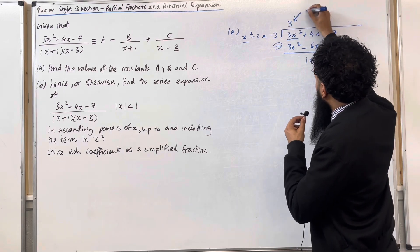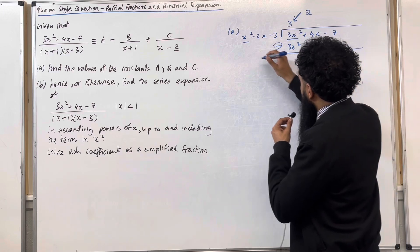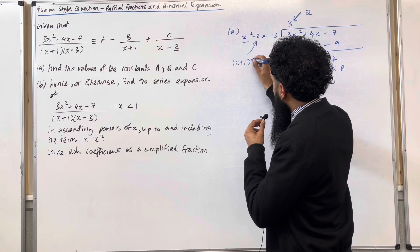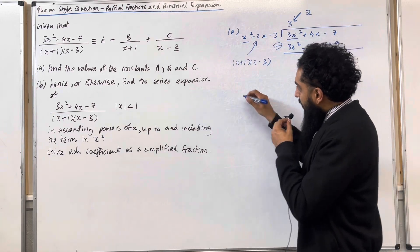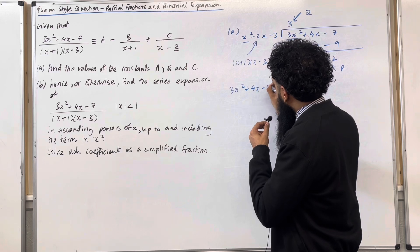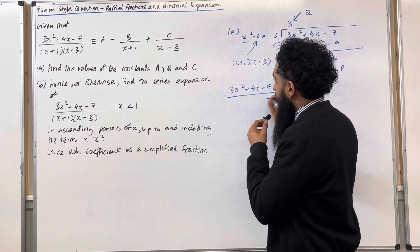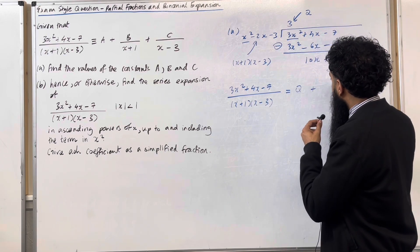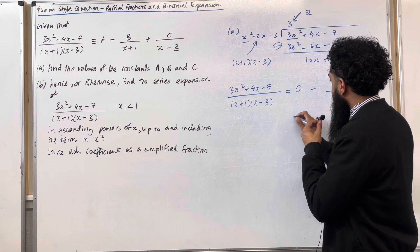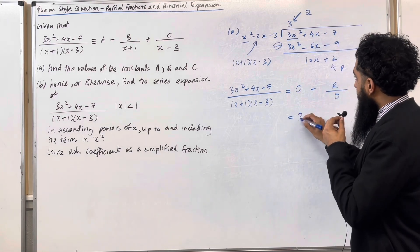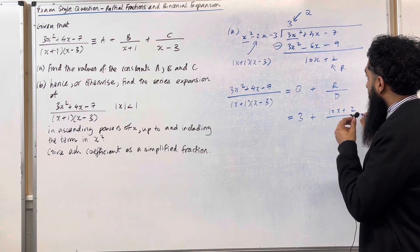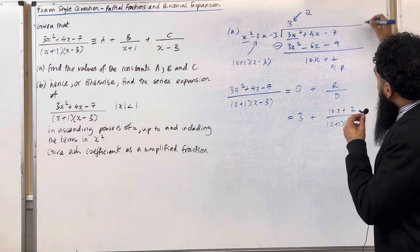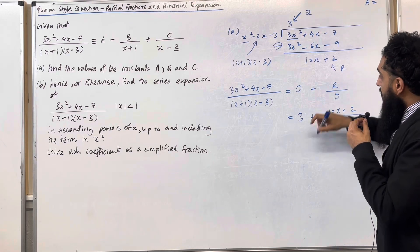Minus 7 minus minus 9 is plus 2. So the quotient is 3 and the remainder is 10x plus 2. The divisor in factorized form is (x plus 1)(x minus 3). So the improper fraction equals quotient plus remainder over divisor: 3 plus (10x plus 2) over (x plus 1)(x minus 3). We know straight away that A, the quotient, is equal to 3.